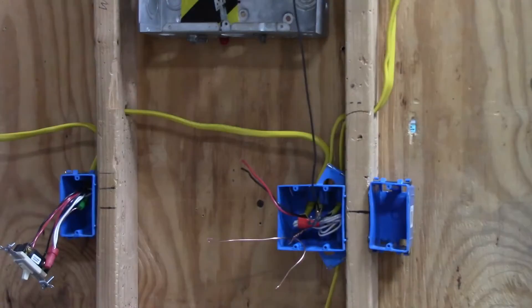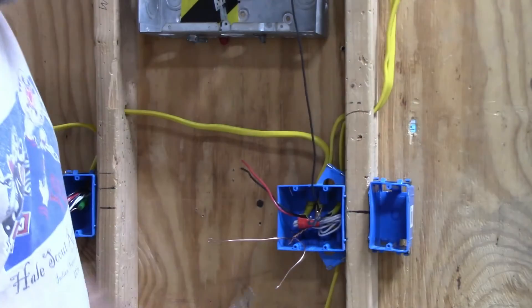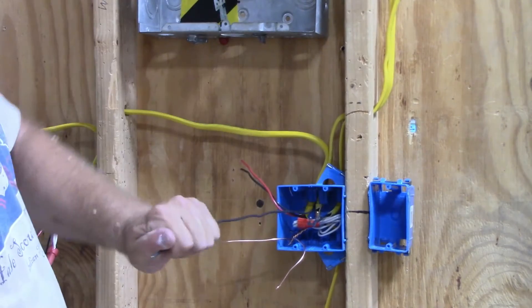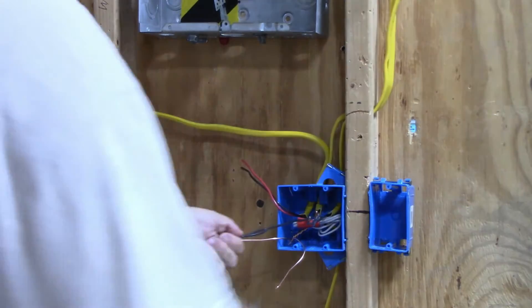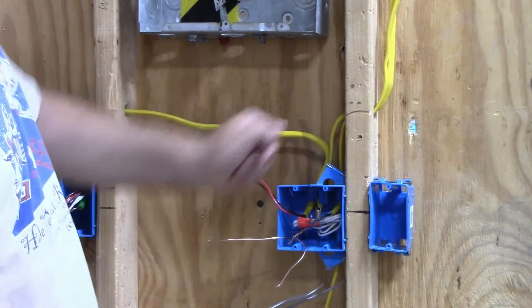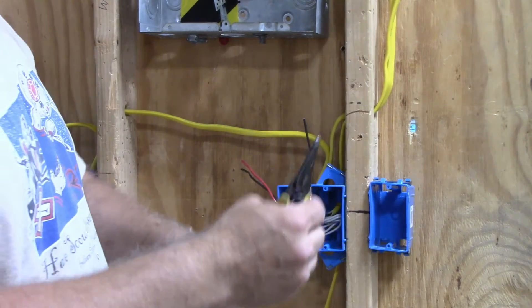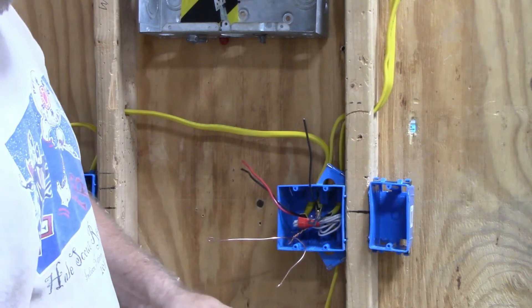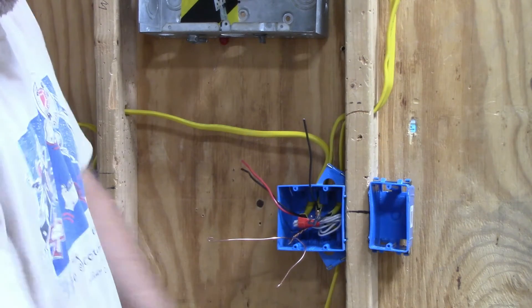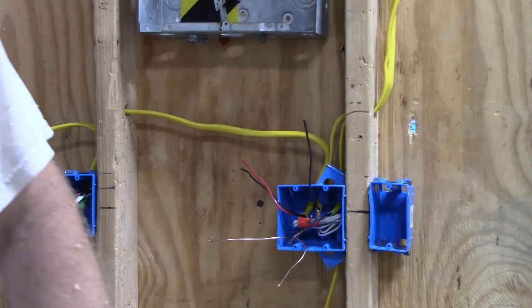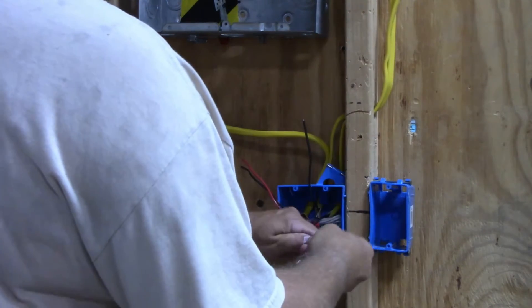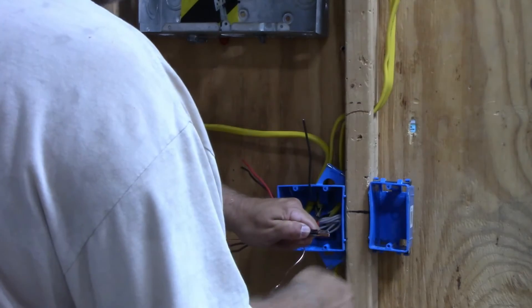I usually like to leave the wire longer when I do two-gang boxes so that I can cut it off and use these two pieces for my pigtails. I would strip these three-quarters of an inch back and attach it to my power in and my power out.